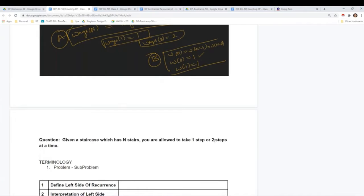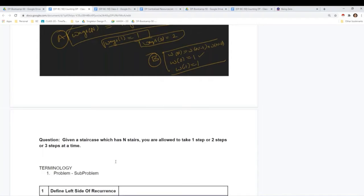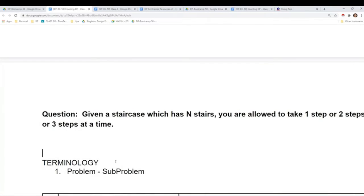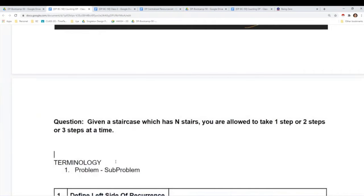Given a staircase problem, you're allowed to take one, two, or three steps. Work out the recurrence again and write it down on pen and paper. Work out a few examples and check whatever recurrence you're coming up with.